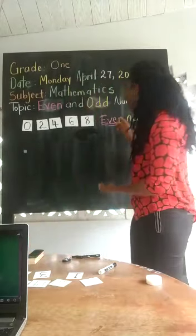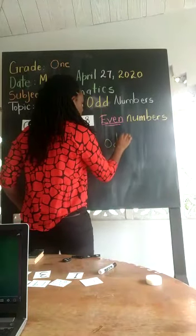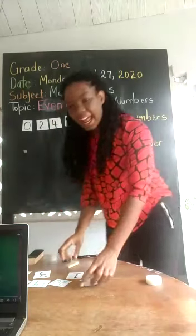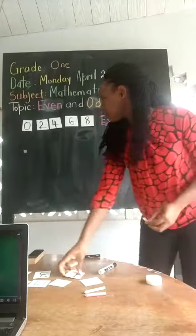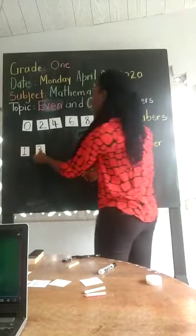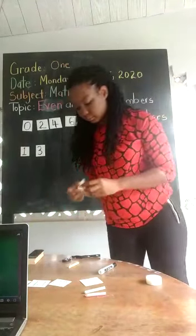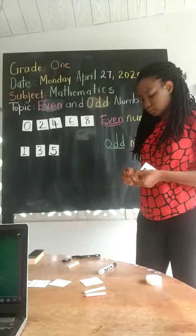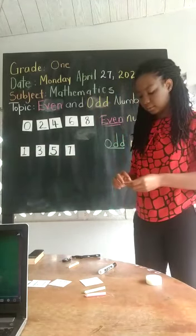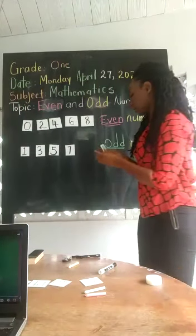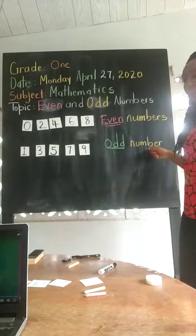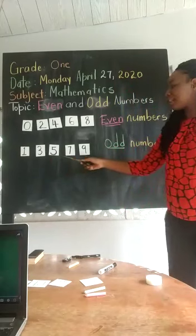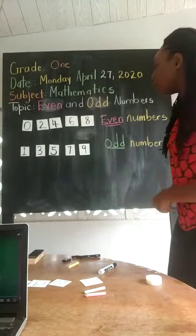Now we're moving along and looking at odd numbers. Let me write the word for you — odd numbers. These numbers that are odd are one, three, five, seven, and nine. They are called odd numbers. We can say: one, three, five, seven, and nine.